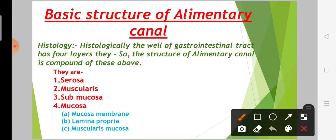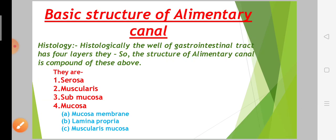We will learn about them. First is serosa, second is muscularis, third is submucosa, and fourth is mucosa. So these are the 4 layers.